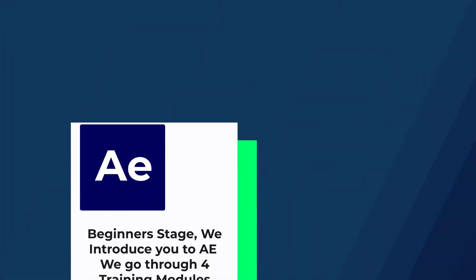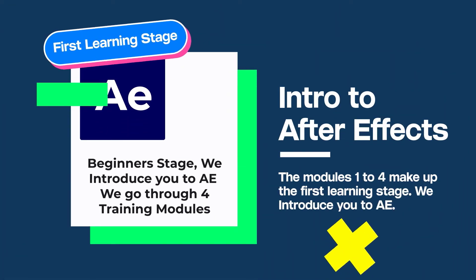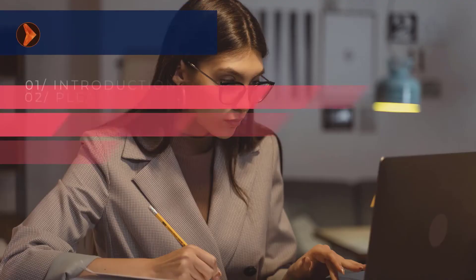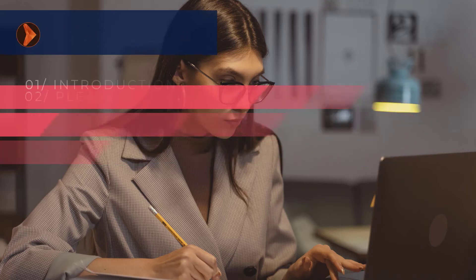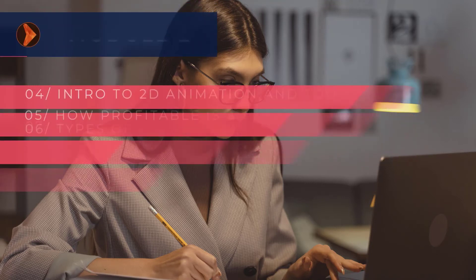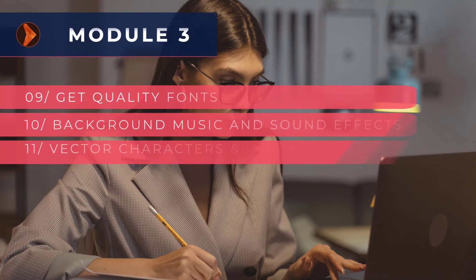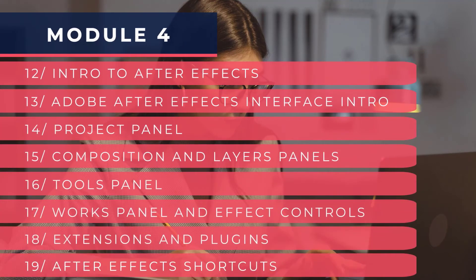Modules one to four make up the first learning stage — the beginner stage — and this is where we start from the very beginning. I will introduce you to After Effects software, explain what After Effects is, introduce you to what 2D animation is, the types and styles of animation, and bring you up to speed on the use of After Effects — the panels, the inside tools, and things you need to be aware of as a beginner.